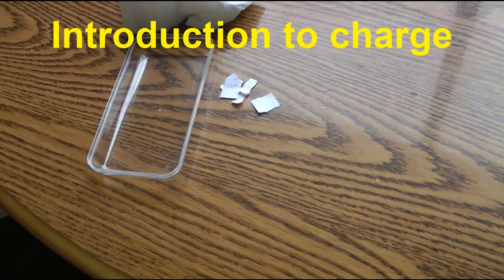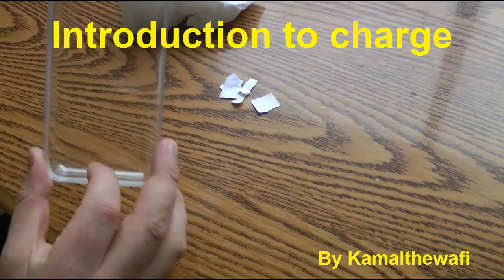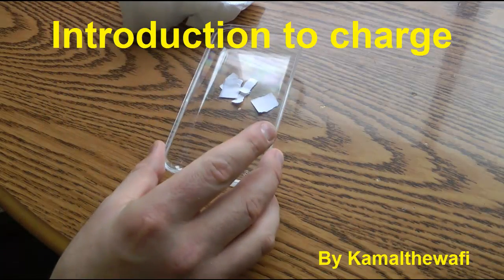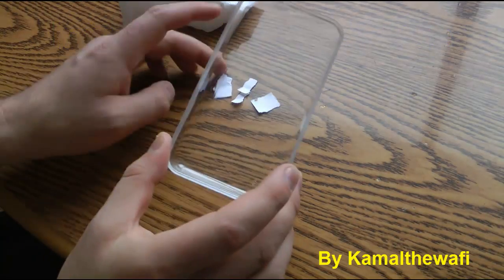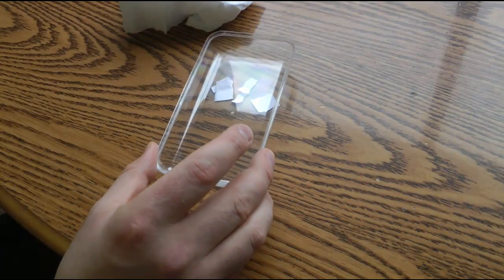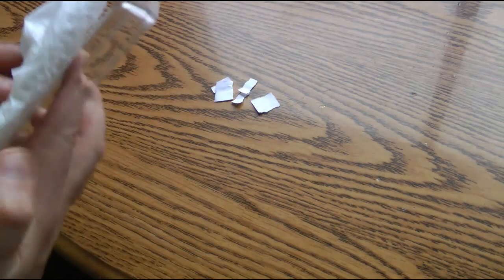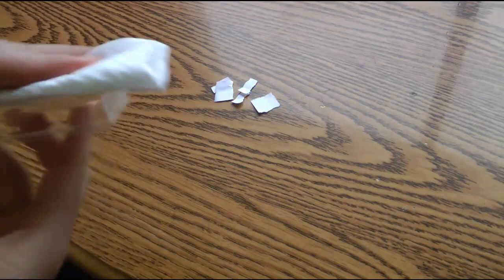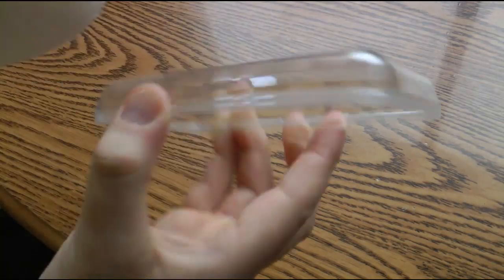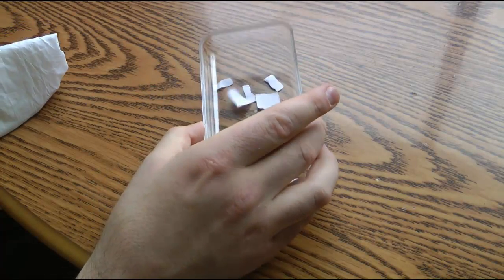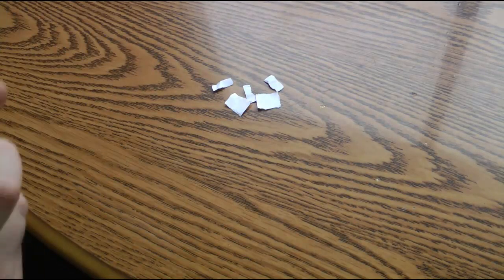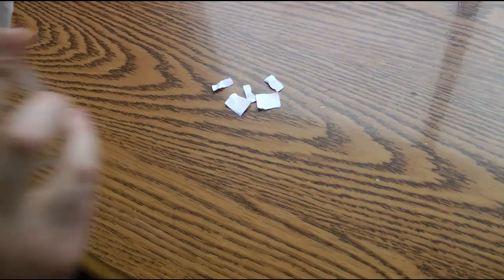OK, so let's introduce the idea of charges. If I take this piece of plastic and bring it near the papers on the table, these little bits of paper, nothing seems to happen. But if I give the plastic a good rub, or polishing first, and then try it, you can see the paper jumps about.